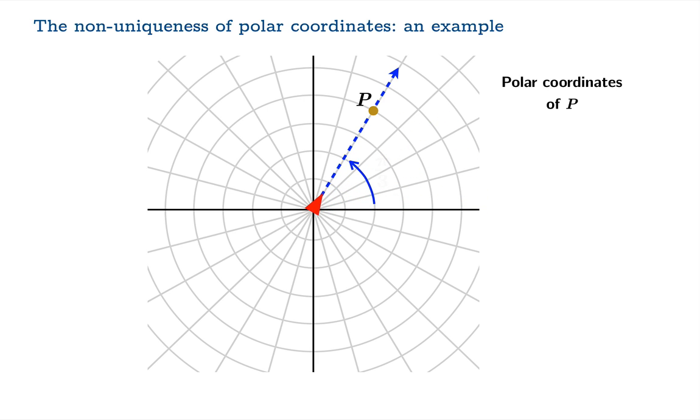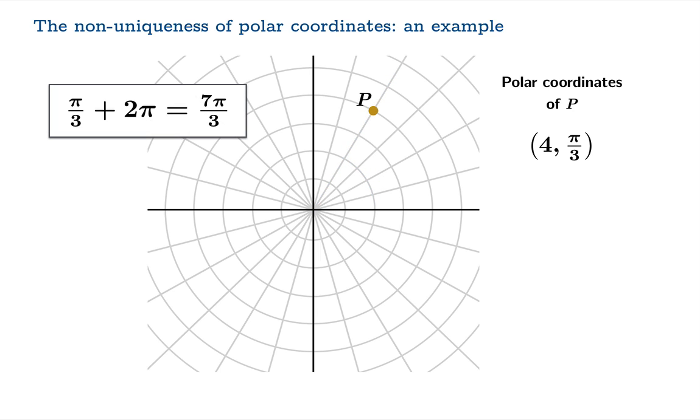Here's how we originally thought of this point. π/3 radians from the positive x-axis measured counterclockwise, and then 4 units away from the origin. But we could add 2π to the direction coordinate, and that means we'd circle around, and then arrive at this direction, and then of course move 4 units out. So (4, 7π/3) are also polar coordinates of the same point.